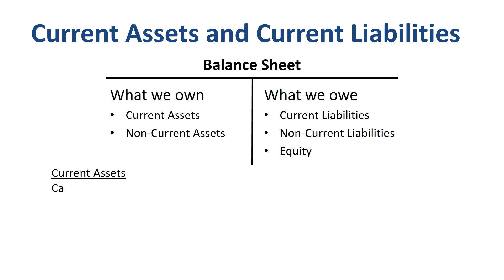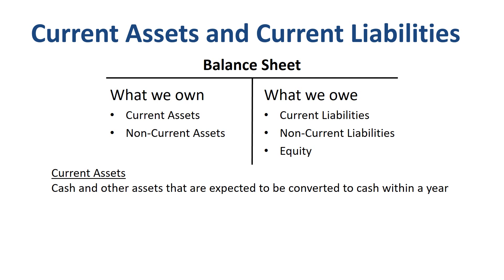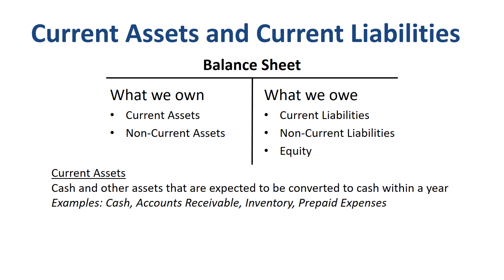Current assets are cash and other assets that are expected to be converted to cash within a year. Some examples of accounts in current assets are: cash; accounts receivable, amounts to be received from customers; inventory, products available for sale; and prepaid expenses, amounts paid but not expensed yet.